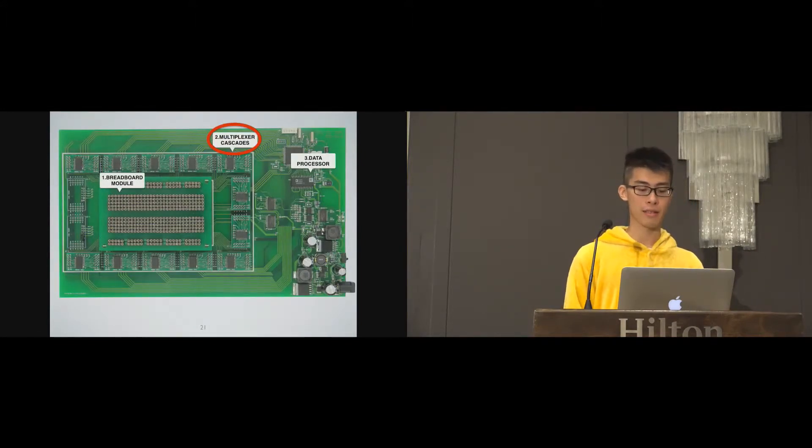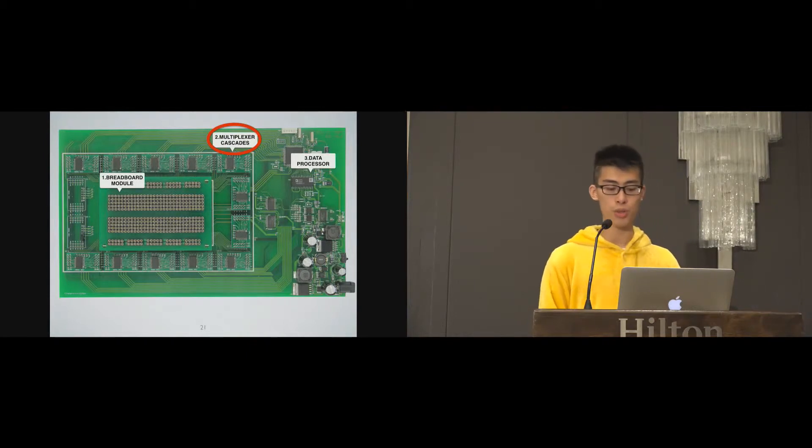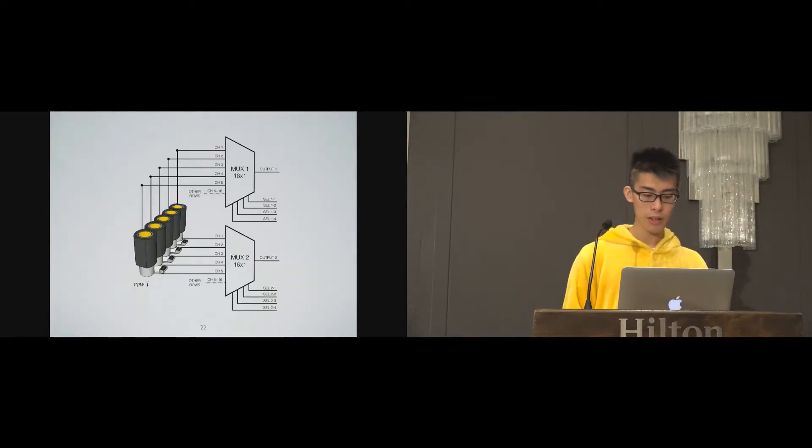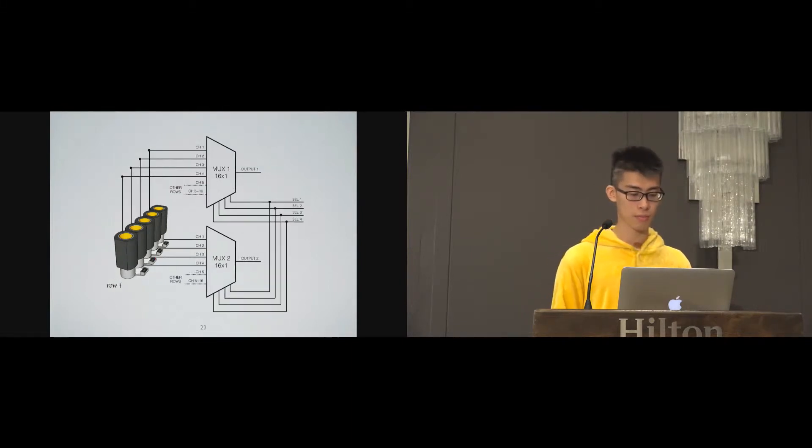Second, the multiplexer cascades. The intent of this is to choose which two headers are picked to measure the voltage between them so that the current can be calculated by the microcontroller unit later. Here's what it would look like. Two multiplexers choose two headers as inflow and outflow. However, we found that this naive approach is impractical because it cost too many multiplexers.